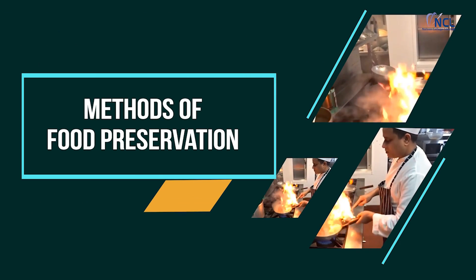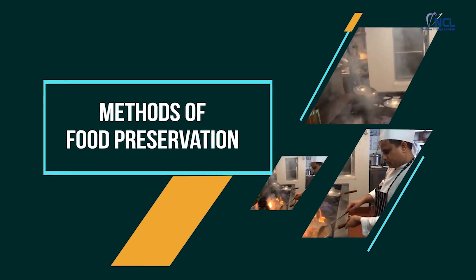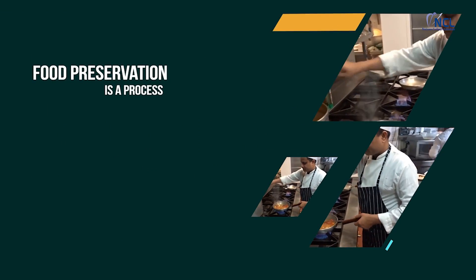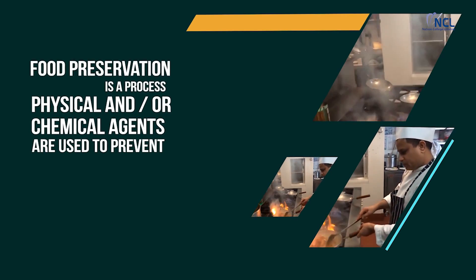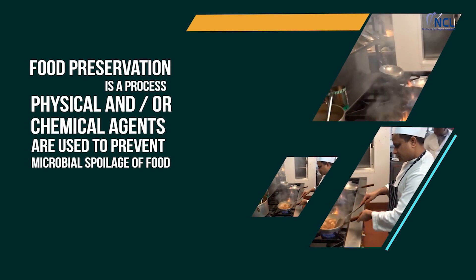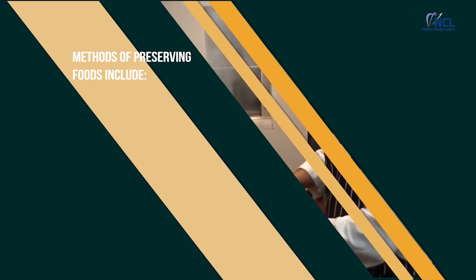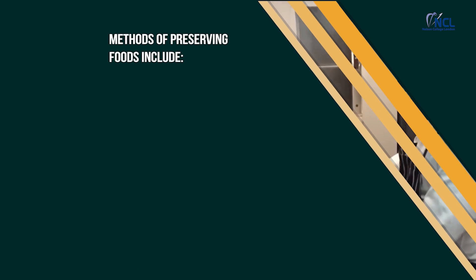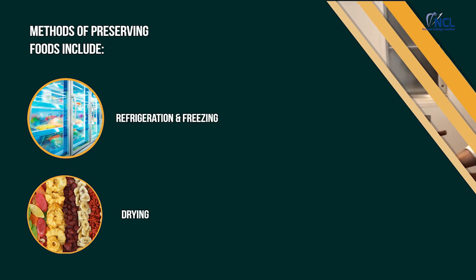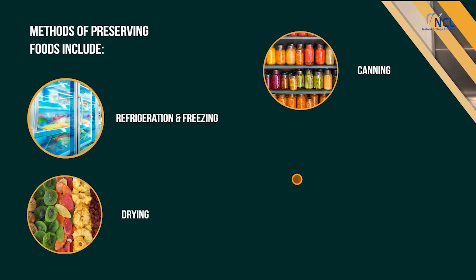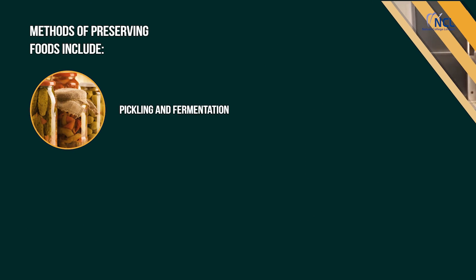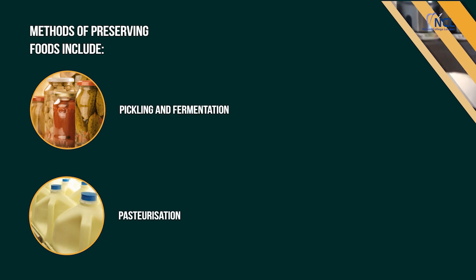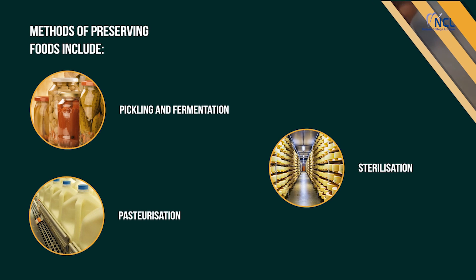Food preservation is a process through which physical and/or chemical agents are used to prevent microbial spoilage of food. Methods of preserving foods include refrigeration and freezing, drying, canning, sugaring, pickling and fermentation, pasteurisation and sterilisation.